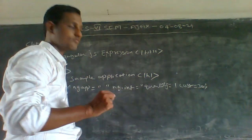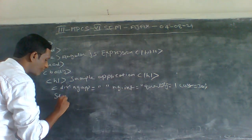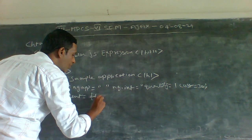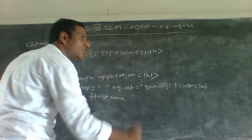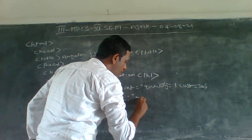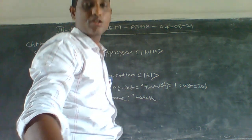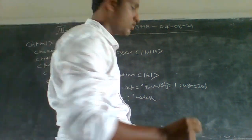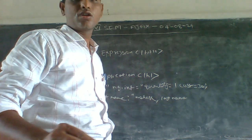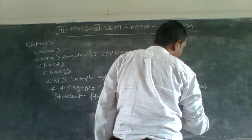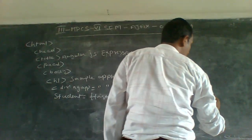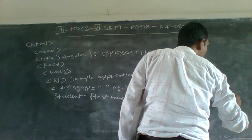Next, quantity is a student object. Student is equal to - first name: okay, my name is okay; last name; roll number: 10.